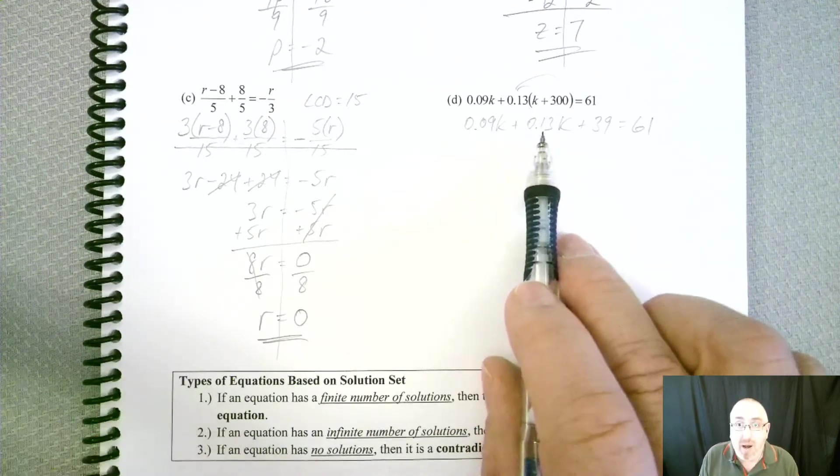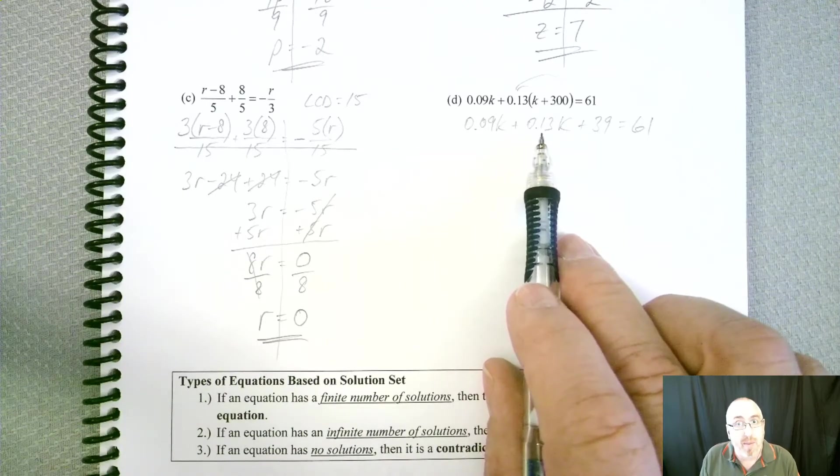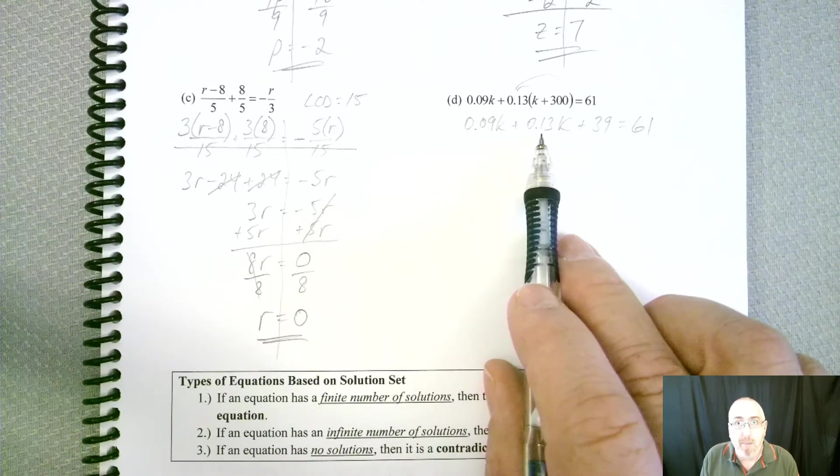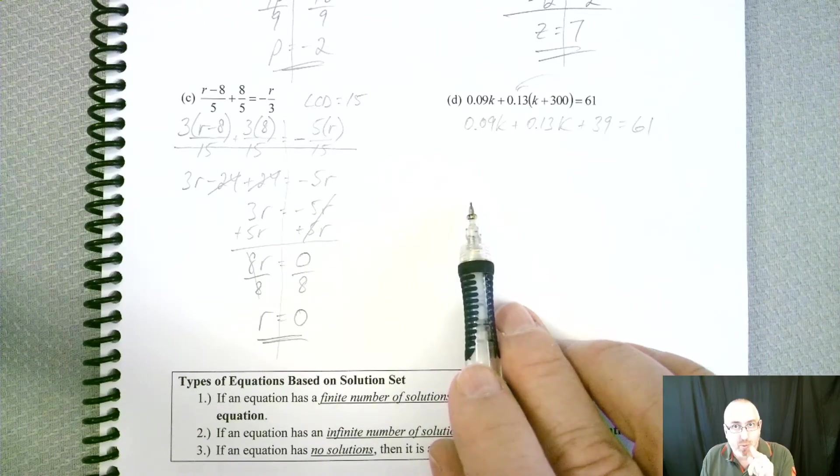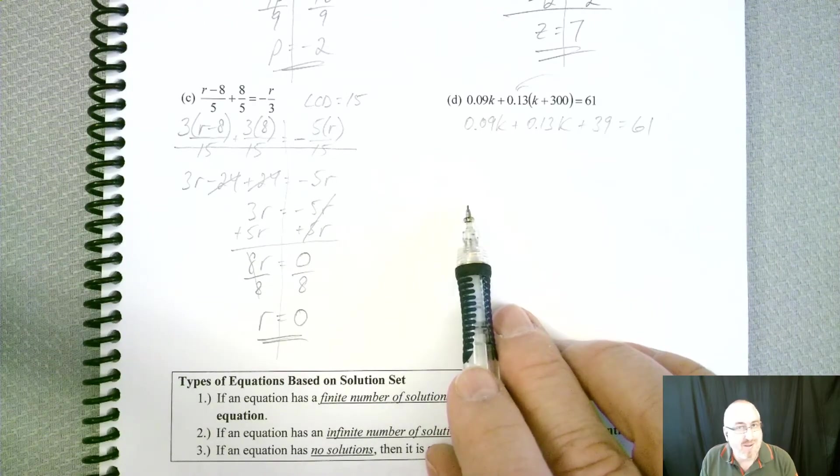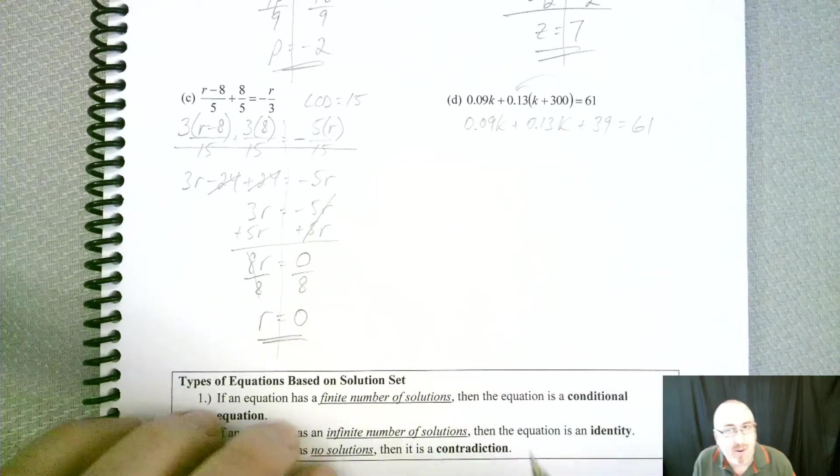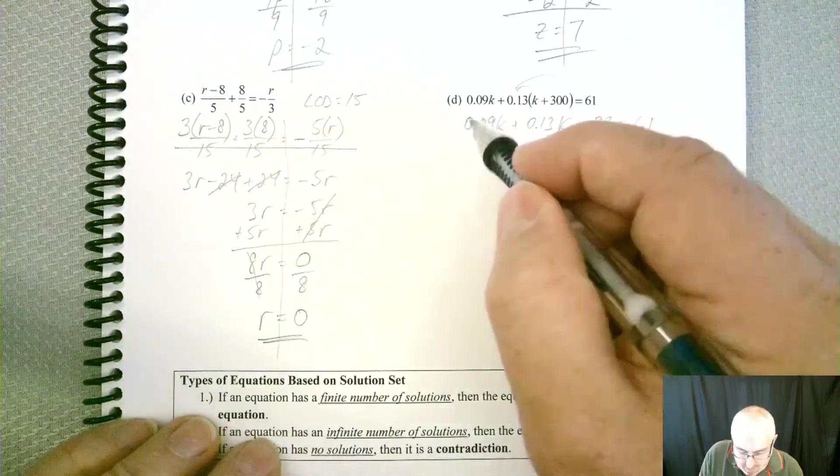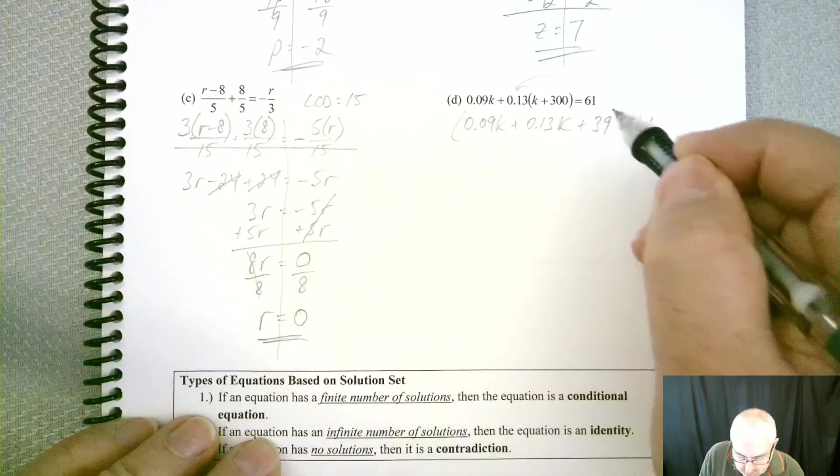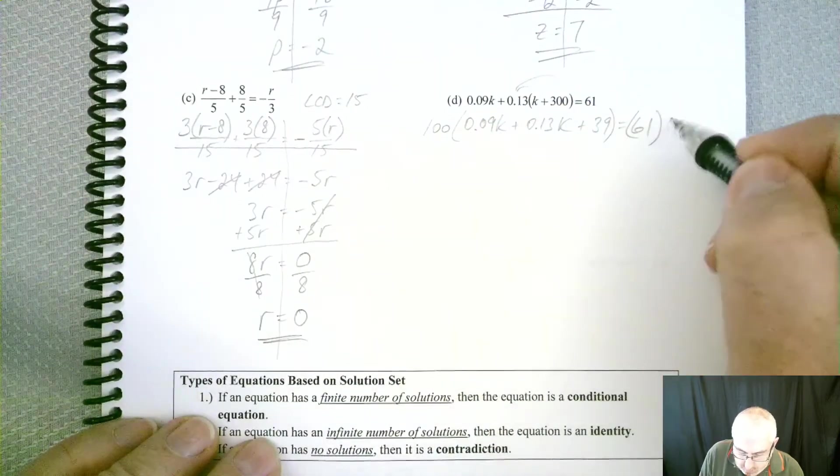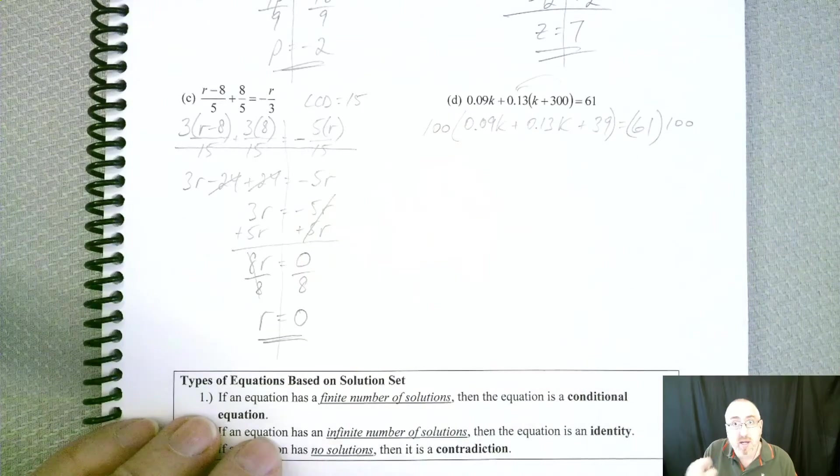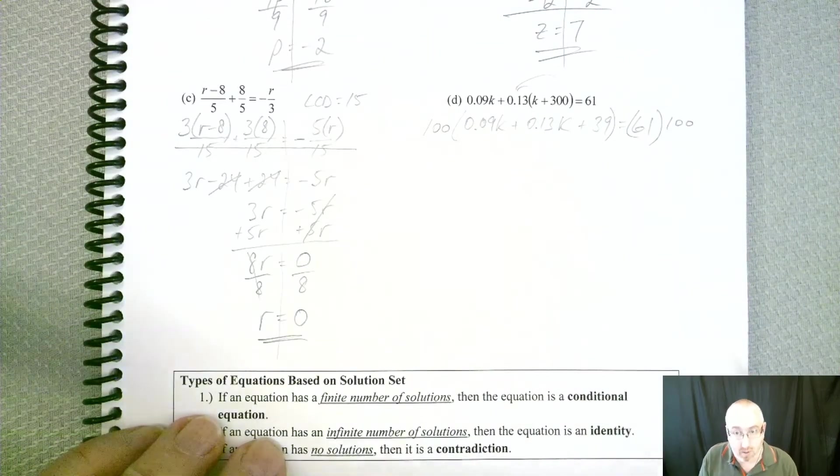So a way to get rid of them right off the bat is to multiply both sides of the equation by something that makes it move two spots. What do you think that number would be? You guessed it. It should be 100.